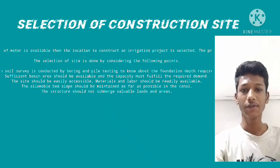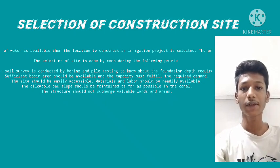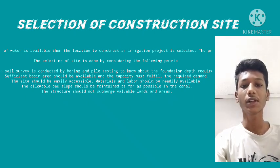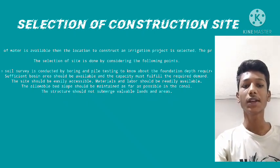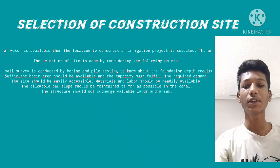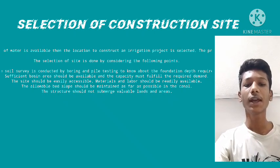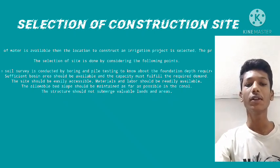Selection of construction site. When a major source of water is available, the location to construct an irrigation project — whether a dam, barrage, or weir — is selected by considering the following points: soil survey is conducted by boring and pile testing to know the foundation depth required; sufficient basin area should be available and capacity must fulfill the required demand; the site should be easily accessible; materials and labor should be readily available; and the canal structure should avoid submerging valuable lands as far as possible.